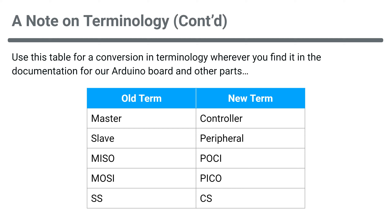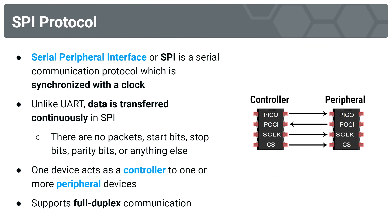Let's get started with SPI, or Serial Peripheral Interface Protocol. It is a serial communication protocol which is synchronized with the clock — dissimilar to UART, which is an asynchronous protocol with no clock. Data is transferred continuously in SPI; there's no concept of a frame format like there was for UART. There are no packets, no start bits, stop bits, or parity bits. It's just a continuous stream of data.